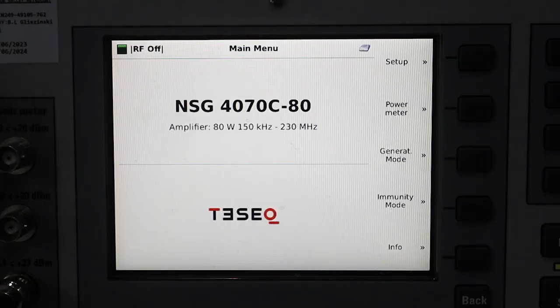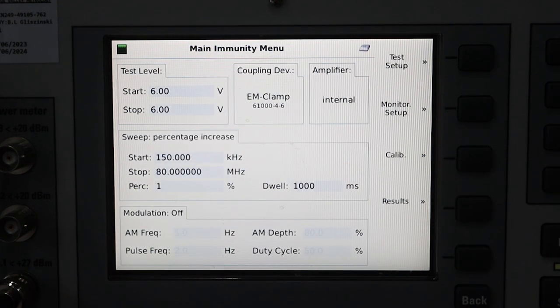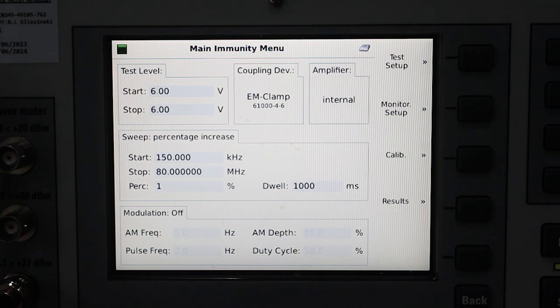All right, here we have our starting screen for our Teseq NSG 4070. Now let's get that calibration going. To do that, go ahead and go to immunity mode, and this is our general immunity mode menu.